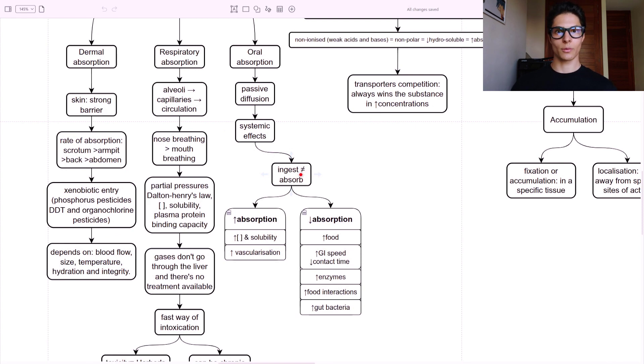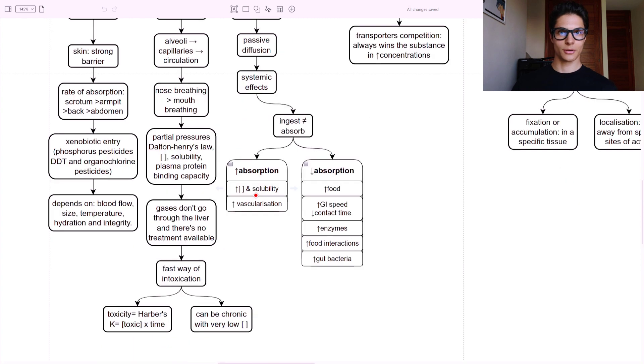And then we have oral absorption. So there is a passive diffusion here and it can lead to systemic effects. You have to remember that ingestion is not equal to absorption. Why? Because not everything we ingest, we end up absorbing. What increases the absorption is the high concentration and solubility of the toxin, as well as high vascularization of the gastrointestinal tract. What lowers the absorption is food. When we eat, we can lower the absorption of many toxins. Think about alcohol, for example. Also higher gastrointestinal speed, which means less contact time - less time in contact with the intestine will decrease the absorption. Having enzymes that destroy or try to manipulate these toxins will decrease the absorption. Food interactions will decrease the absorption and our gut bacteria will also try to protect us.